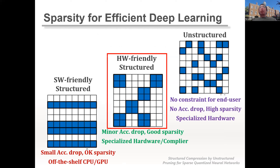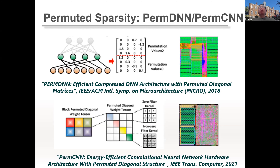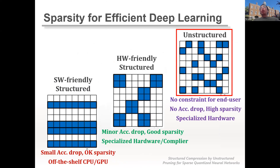For hardware-friendly structured sparsity, we proposed PermDNN and PermCNN, introducing a new type called permuted sparsity, inspired by the design of regular LDPC codes. Similar to the shift from irregular to regular LDPC codes, we introduced permutation spatial patterns into the sparse matrices of deep learning models, achieving high accuracy with very low sparsity overhead. Based on this idea, we implemented a corresponding hardware architecture laid out in CMOS 28nm technology.